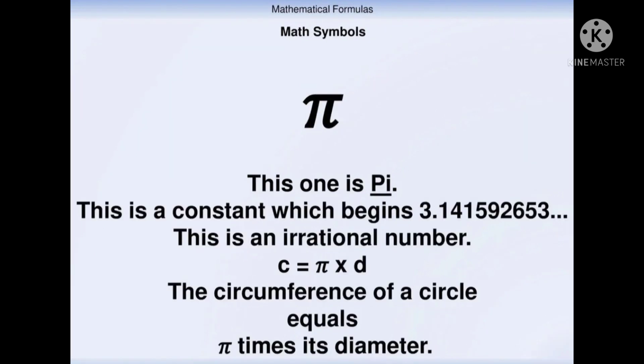This one is pi. This is a constant which begins 3.141592653. This is an irrational number. c = π × d. The circumference of a circle equals pi times its diameter.